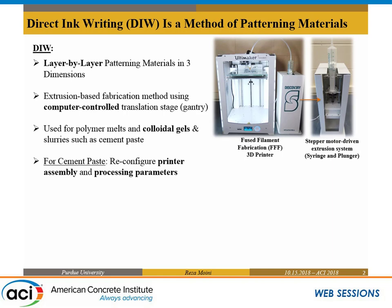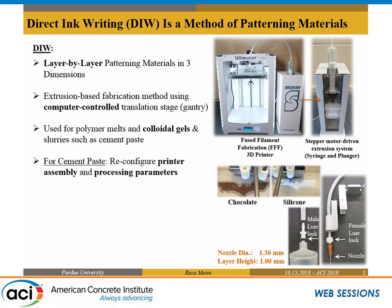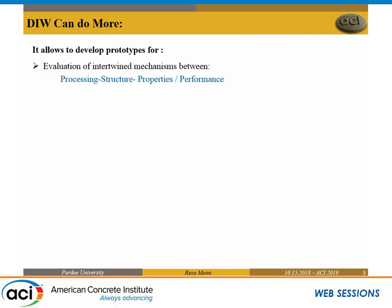We've developed other printers, but that's beyond the scope of this work. To do direct ink writing for cement paste, you need to reconfigure your printing platform and process and do modifications. You can also work with materials such as silicone and chocolate to integrate and parametrize. I won't touch on ink development, flow processes, rheologies, and extrudal shape-holding — those are other aspects of the work we won't be talking about today.